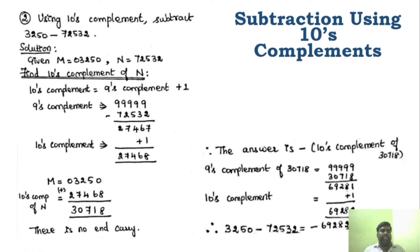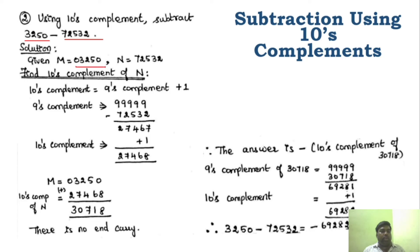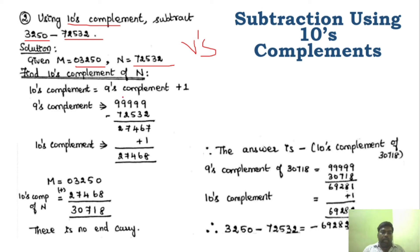So we will see another problem. This is a different subtraction using ten's complement. This is M and this is N. The first step is to equalize the digit count — here M and N have the same number of digits, so we proceed. The R's complement is the ten's complement. First, find the 9's complement of N by subtracting from 99999, which gives 76472. Then add 1 to get the ten's complement, the R's complement.